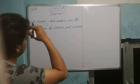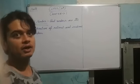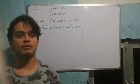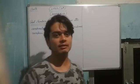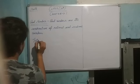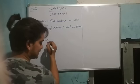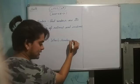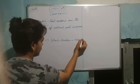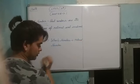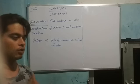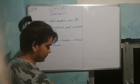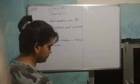So real numbers are the combination of rational and irrational numbers. The starting numbers of natural numbers begin from 1, and the whole numbers start from 0. Now we have integers.